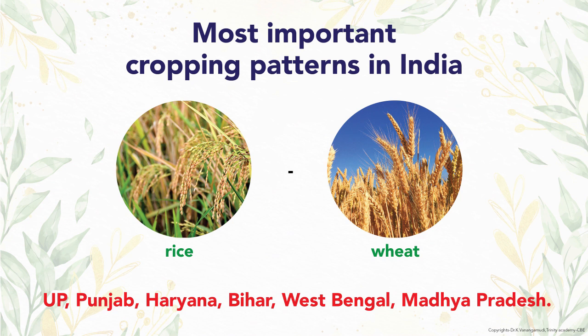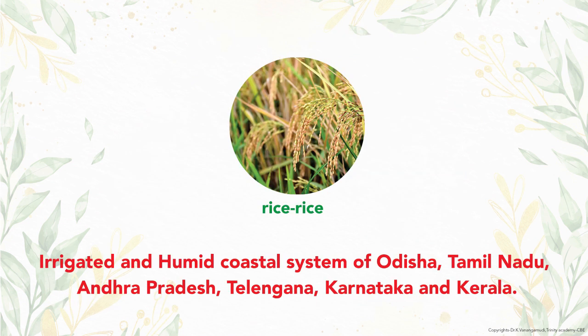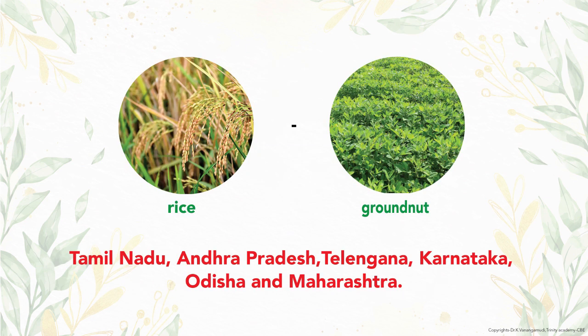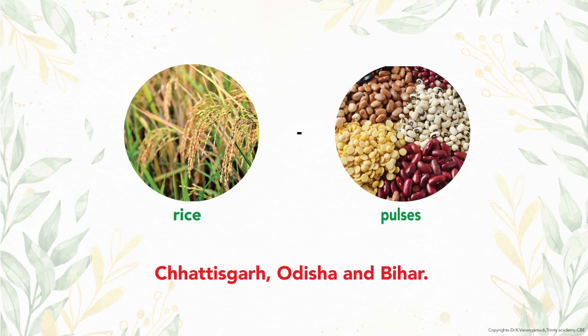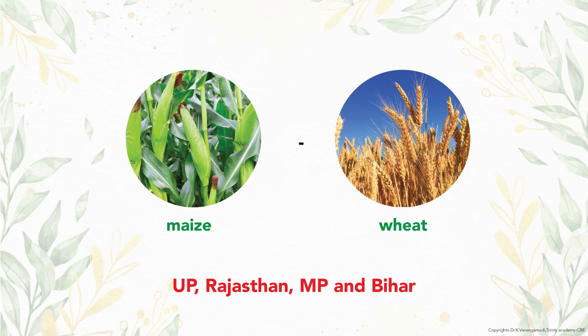There are many cropping patterns in India. Rice–wheat is mainly followed in Uttar Pradesh, Punjab, Haryana, Bihar, West Bengal, and Madhya Pradesh. Rice–rice is the irrigated and humid coastal system of Odisha, Tamil Nadu, Andhra Pradesh, Telangana, and Kerala. Rice–groundnut is followed in Tamil Nadu, Andhra Pradesh, Telangana, Karnataka, Odisha, and Maharashtra. Rice–pulses is followed in Chhattisgarh, Odisha, and Bihar. Maize–wheat is followed in Uttar Pradesh, Rajasthan, Madhya Pradesh, and Bihar.